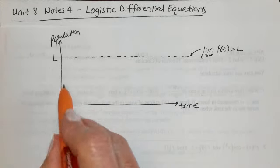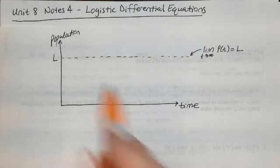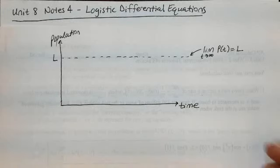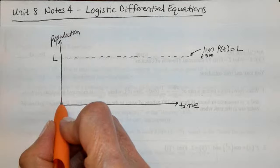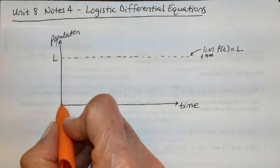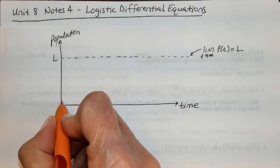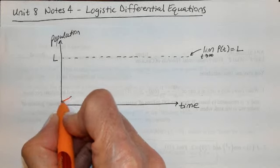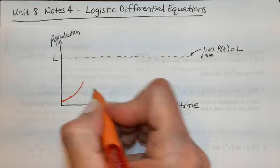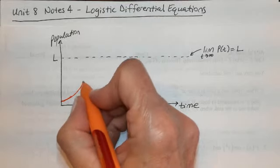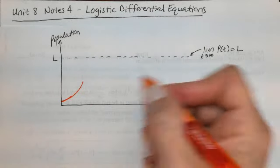If our initial population begins quite low — think of a new pond starting with about 20 fish — it's going to take a little time to get growing. The growth begins positive but a little flatter at first. Then at some point the growth gets really fast, but as we get closer to the carrying capacity the pond starts to feel a little snug.